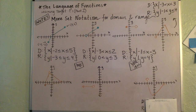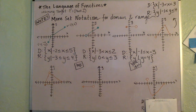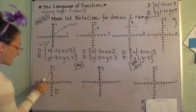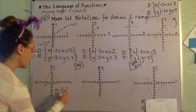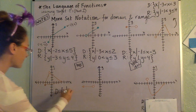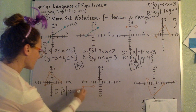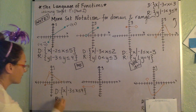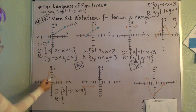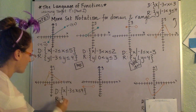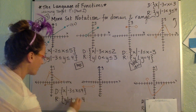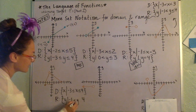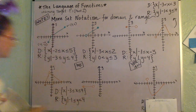We can do domain and range even when we're dealing with something that's not a function — like this triangle, which wouldn't pass the vertical line test. So for this one, our domain scan: it's looking like it goes from negative three to four, and both of those are included. And then our range: it's looking like it goes from negative one up to four. At negative one it's included; at four it's an open dot, so it is not included.